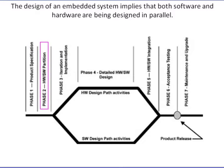Phase 2 is partitioning of the design into its software and hardware components. Designing the hardware for an embedded system is more than just selecting the right processor and gluing it to a few peripherals. Hardware-software partitioning is the key part of designing an embedded system — you don't just pick a processor, design the hardware, and hand it to the software team.